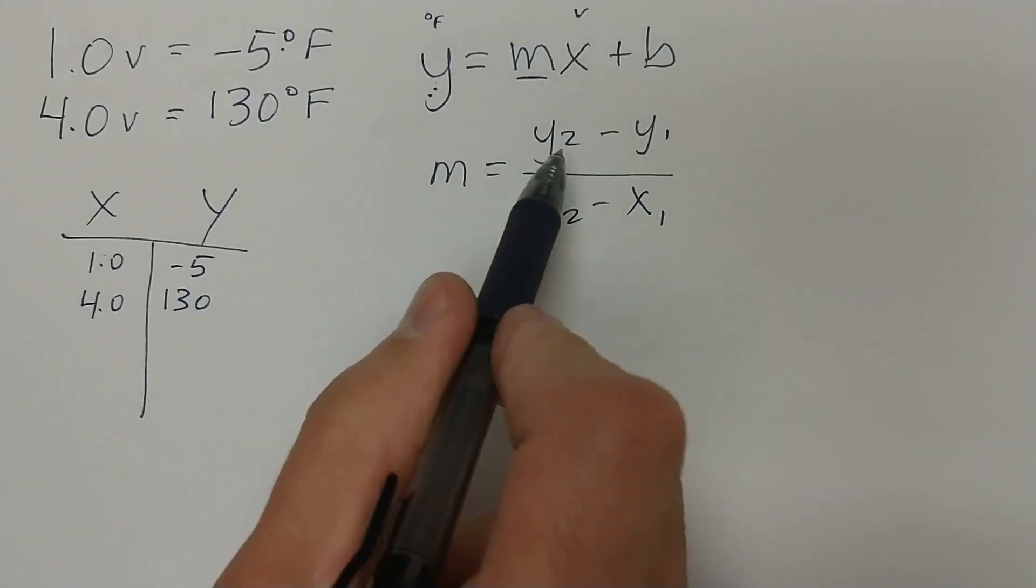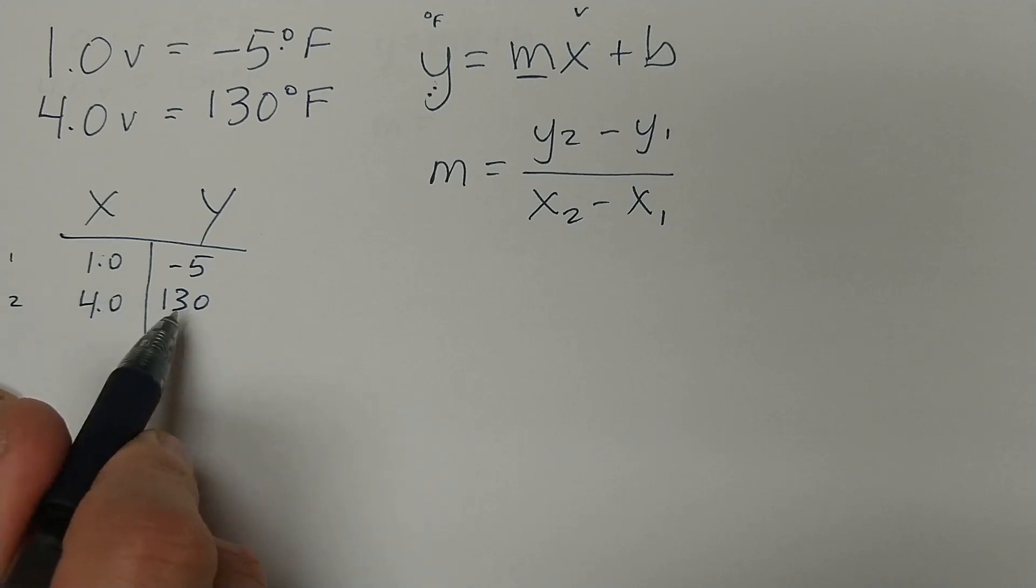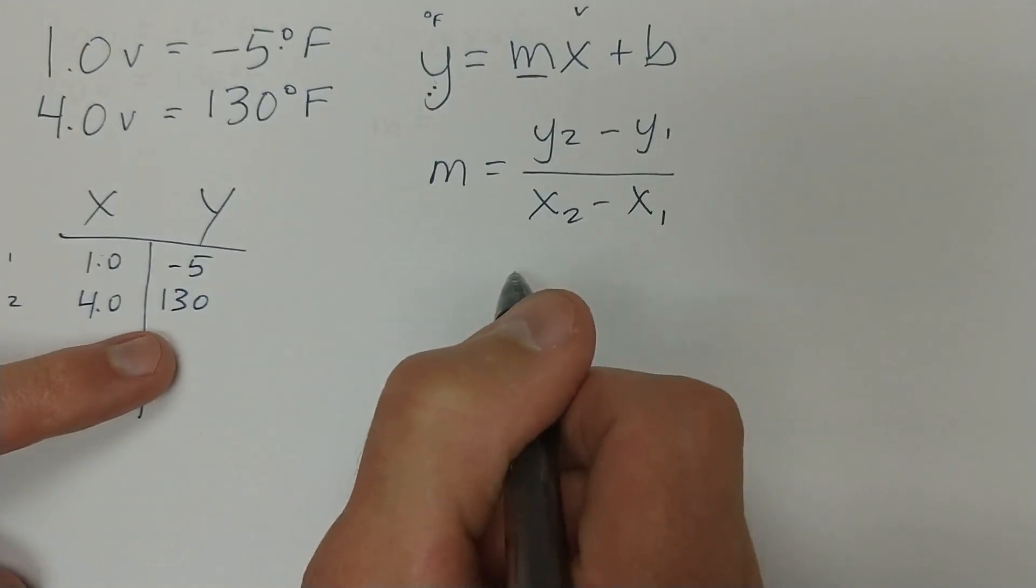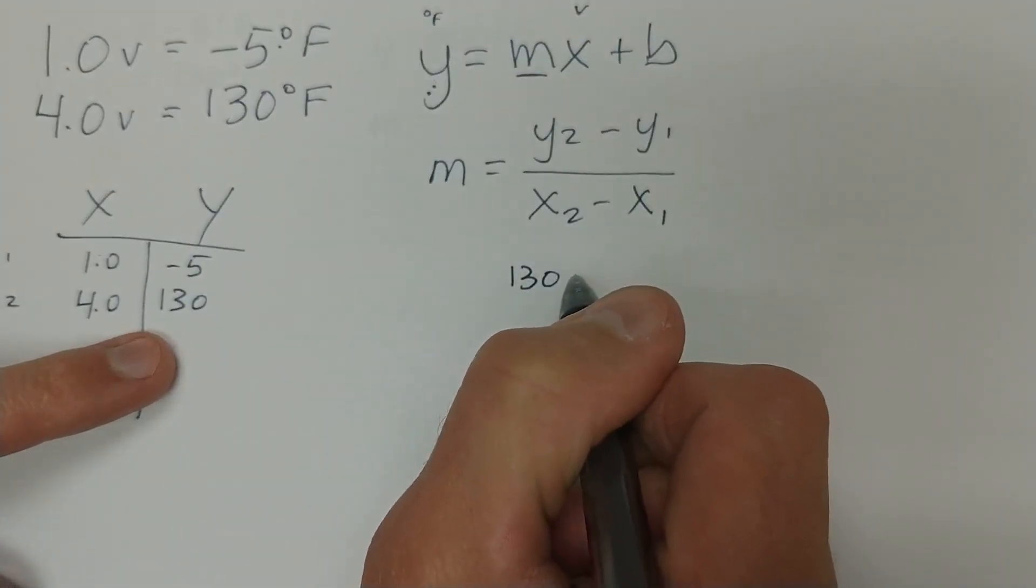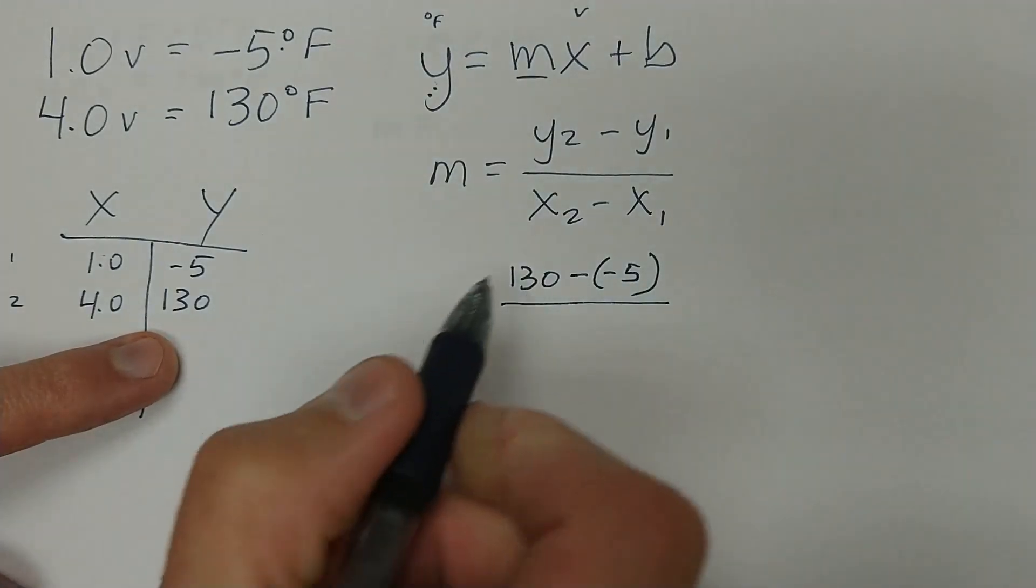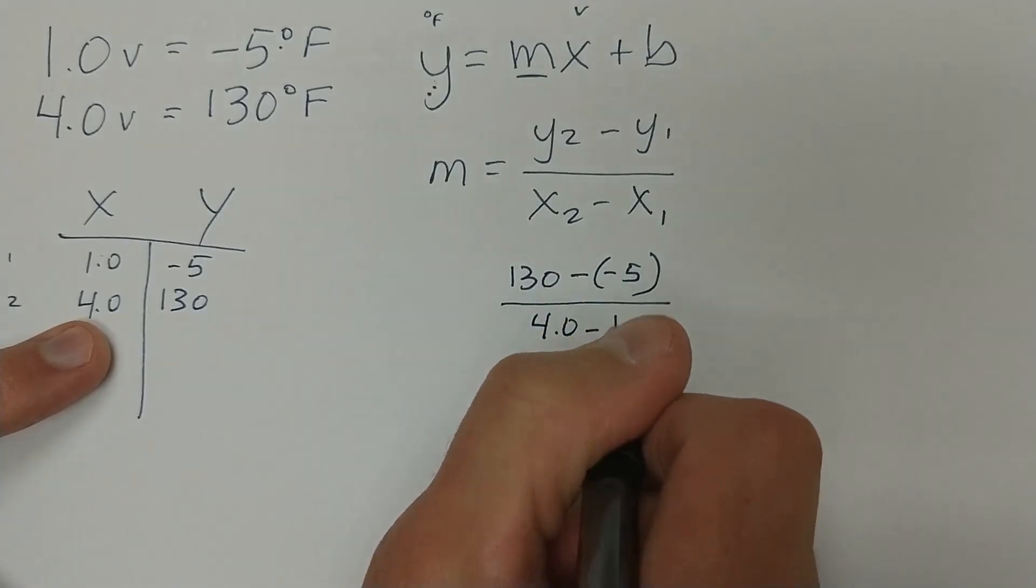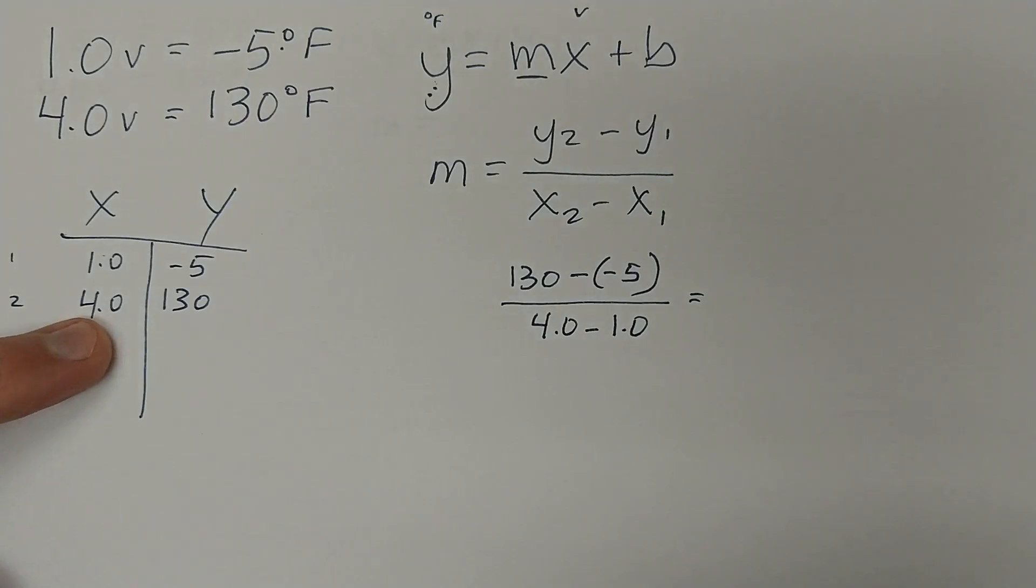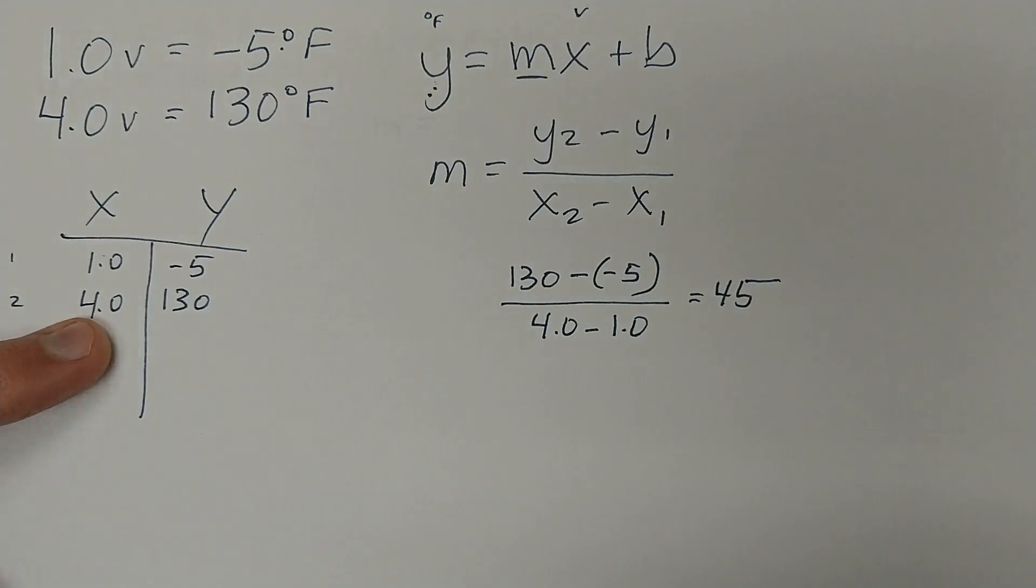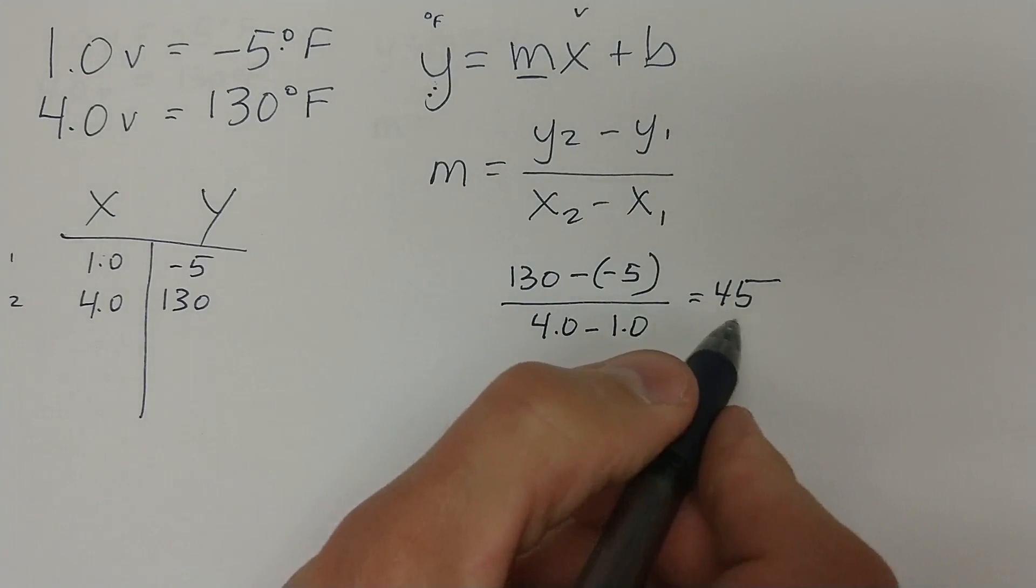Now let's plug these in over here. Y2 minus Y1. We'll call this one and we'll call this two. And we can do this in either order as long as we're consistent in how we do this. So we'll say 130 degrees minus a negative five degrees over four volts minus one volt. And the result of that is 45. So we do that math, plug it into your calculator if you need to, and find out that M equals 45.